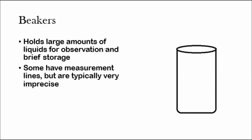Beakers. Beakers hold large amounts of liquids for observation and brief storage. They have measurement lines sometimes, but they're very imprecise. So if you ever wanted to measure the volume of a liquid, you wouldn't use a beaker.